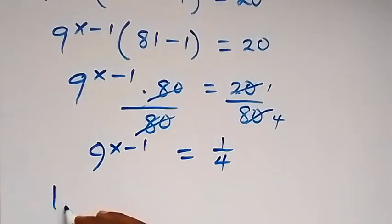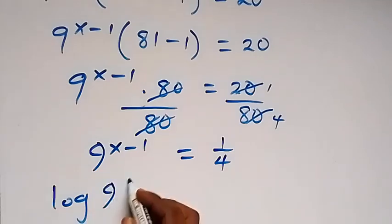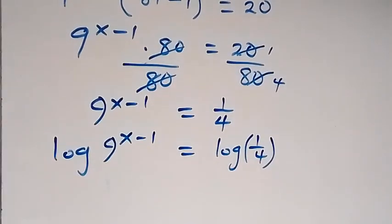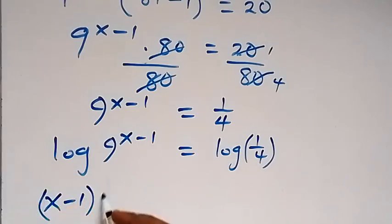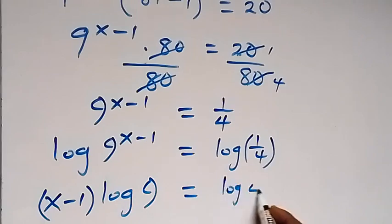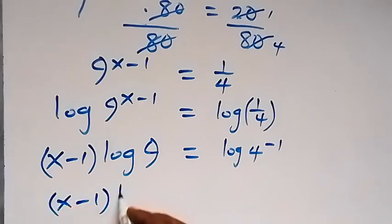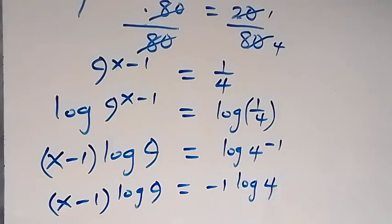Then next, let's take the logarithm. We have log of 9 raised to the power x minus 1 equals log of 1 over 4. From here, we have x minus 1 times log 9, which is equal to log 4 raised to the power minus 1. This minus can come to the front, so this becomes x minus 1 times log 9 equals minus 1 times log 4, so minus log 4.